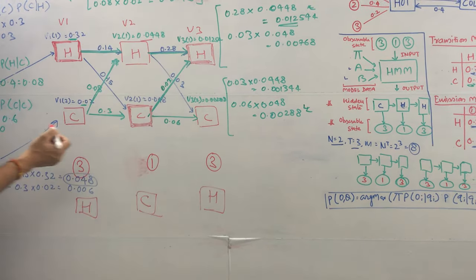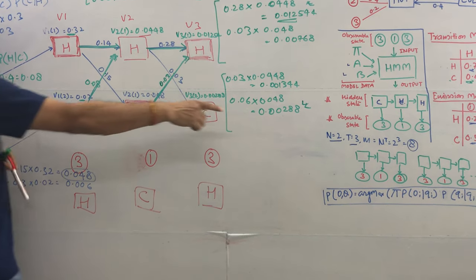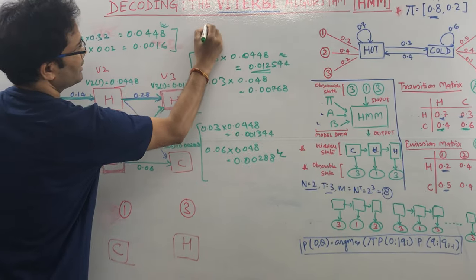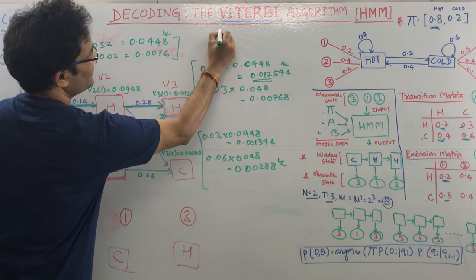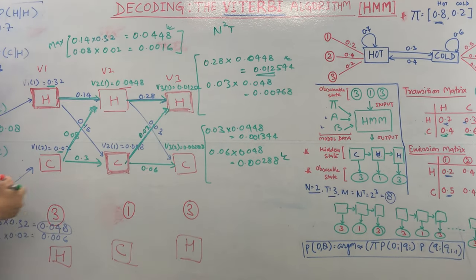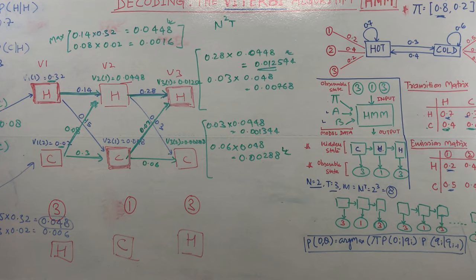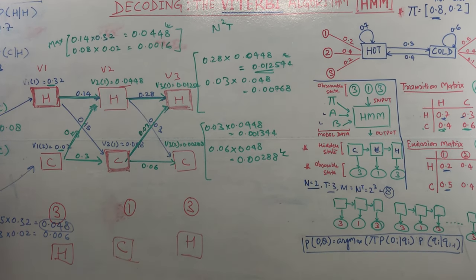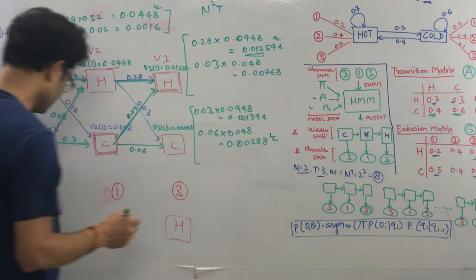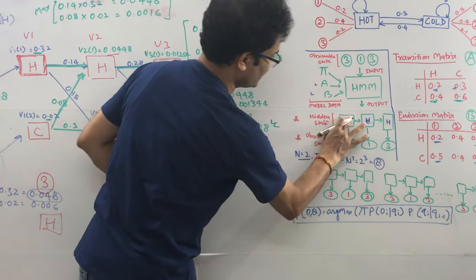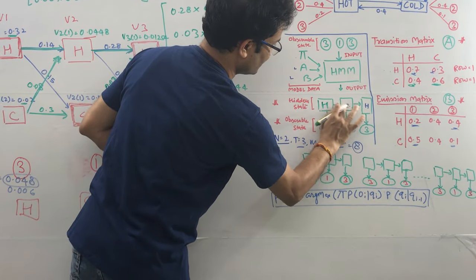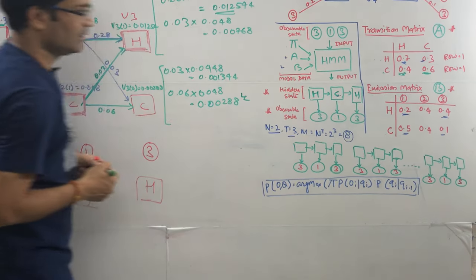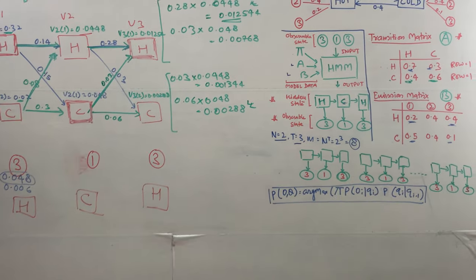The complexity is very manageable — it is n-squared times T. When you use the Viterbi algorithm, the complexity is n-squared T, which is much more efficient. You can get the answer quickly. The actual answer is H, C, H. That was all about the Viterbi algorithm.